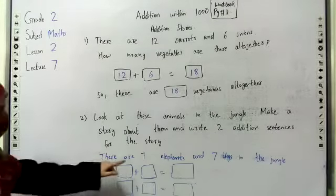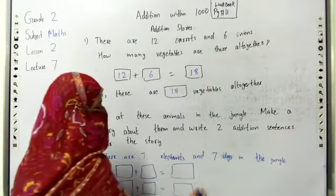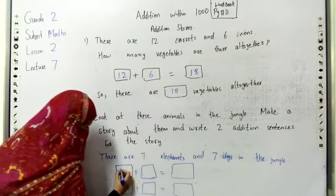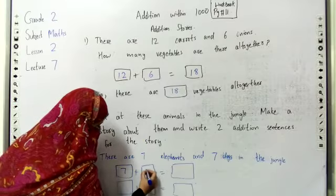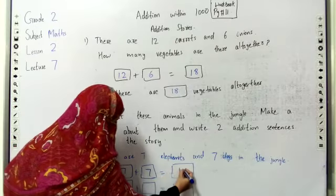There are seven elephants and seven dogs in the jungle. So we have to add these animals. Seven plus seven is equal to fourteen.